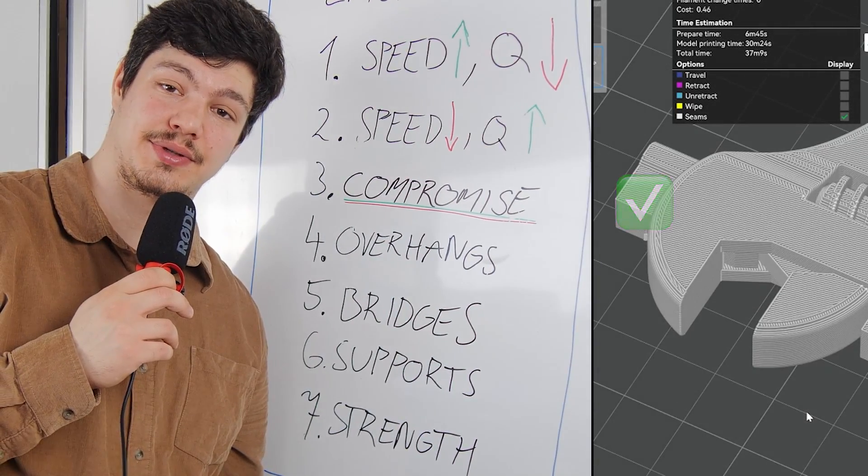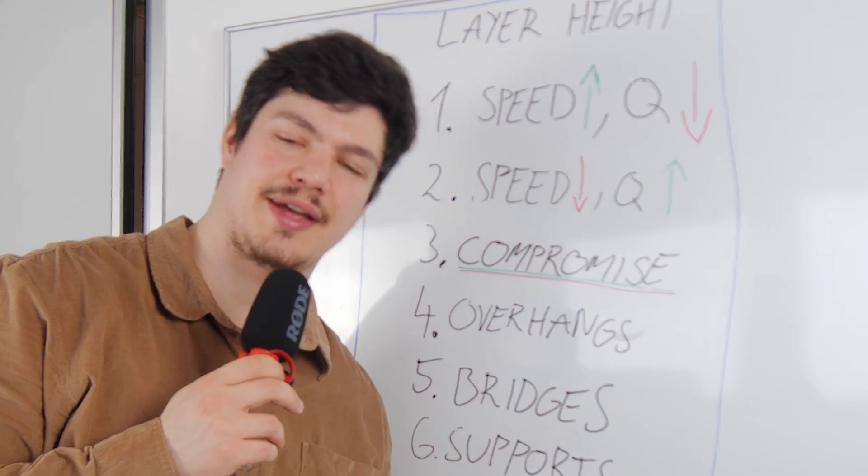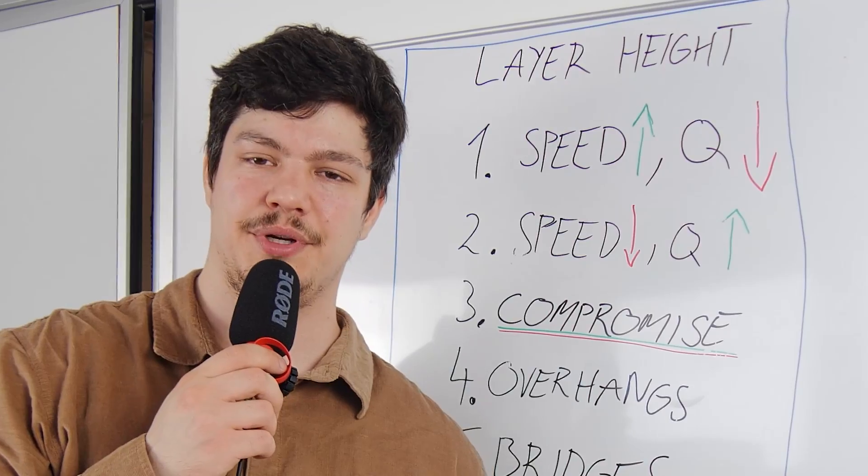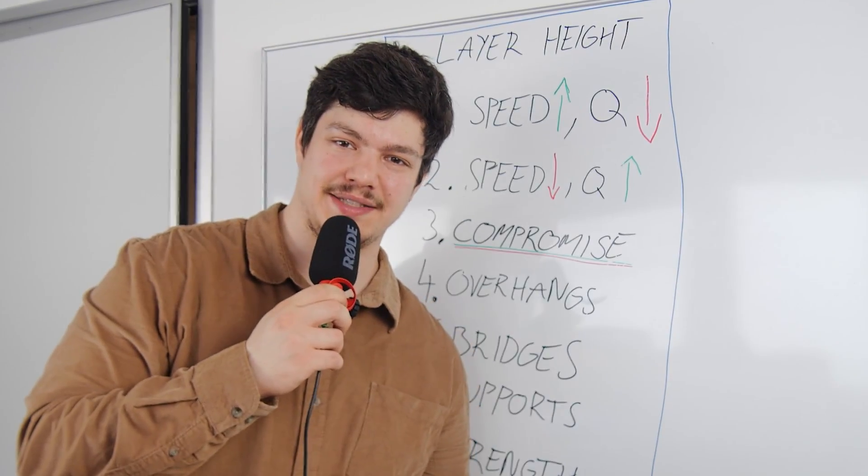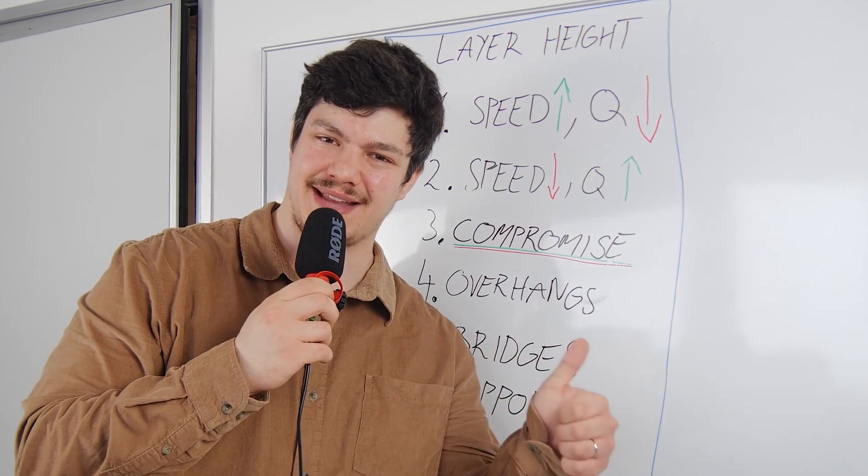A good rule of thumb is to keep the layer height between 25% and 75% of the nozzle's diameter. Be sure to do some testing so you find the sweet spots for your printer. Now that you know all this, you can make better slicing decisions. Happy printing!